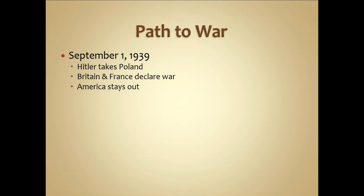Britain and France had an alliance with Poland as a system of protection, so they immediately declared war on Germany — and this is what begins World War Two. The United States tried to stay out, maintaining their isolationist policies, and at this point were glad they had created their Neutrality Acts of 1935, 1936, and 1937. The fighting over Poland was over within three weeks.